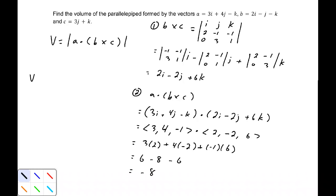So our volume is the absolute value of a dot b cross c. It's the absolute value of -8, so our volume is 8 units cubed.